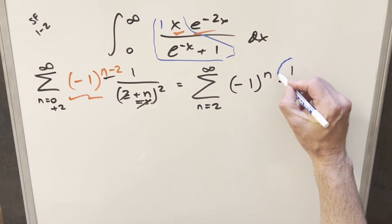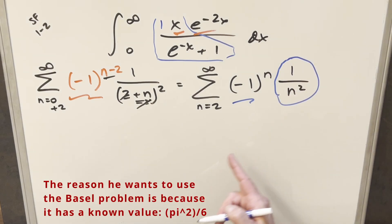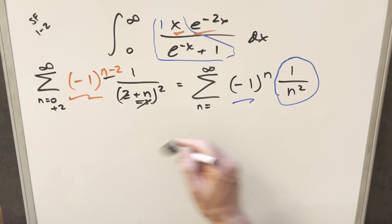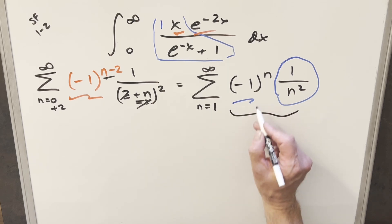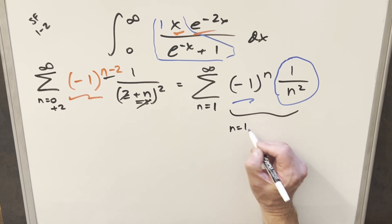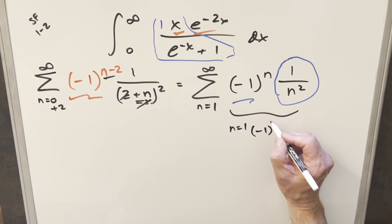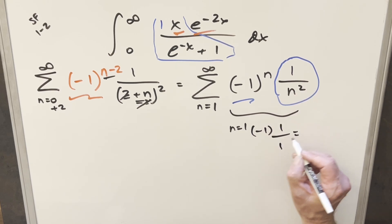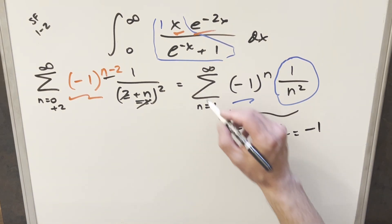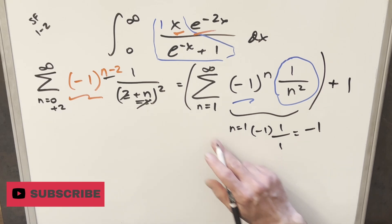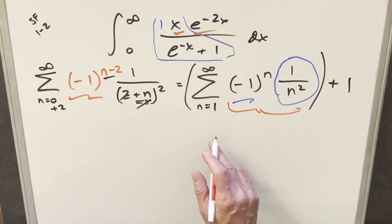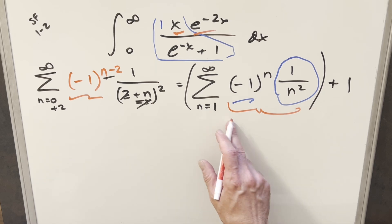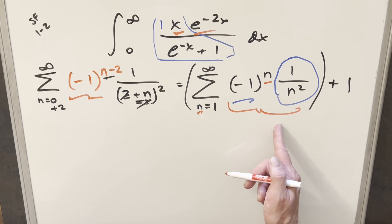Without the (−1)^n this would be the Basel problem, but we want it to start at 1. We change the lower limit to n=1, which adds the n=1 term: (−1)^1 · 1/1^2 = −1. So effectively we subtracted 1, meaning we add 1 back to compensate. Now we split the sum from n=1 to infinity into even terms (n=2k) and odd terms (n=2k−1). When n is even, (−1)^n = +1; when n is odd, (−1)^n = −1, so we are adding all even terms and subtracting all odd terms.